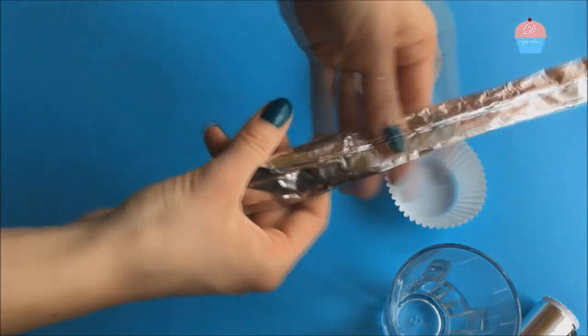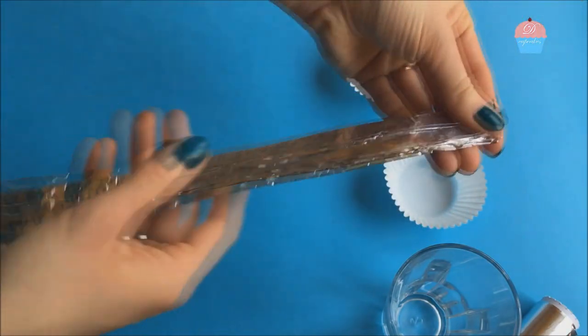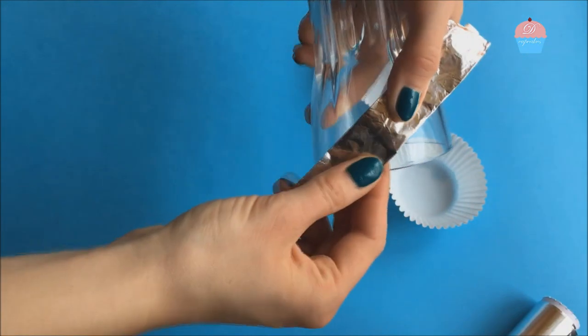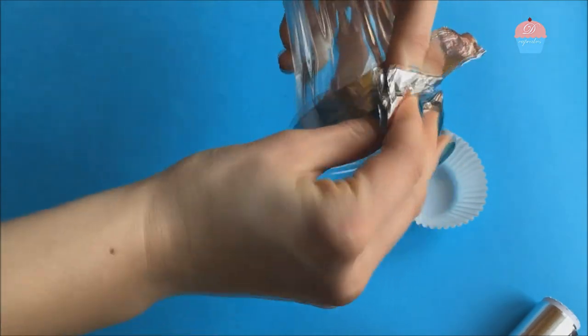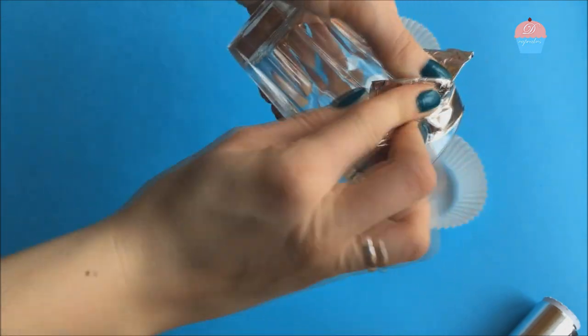Then with foil you will make a circle around your glass so you would know how big your circle needs to be for your cupcakes.